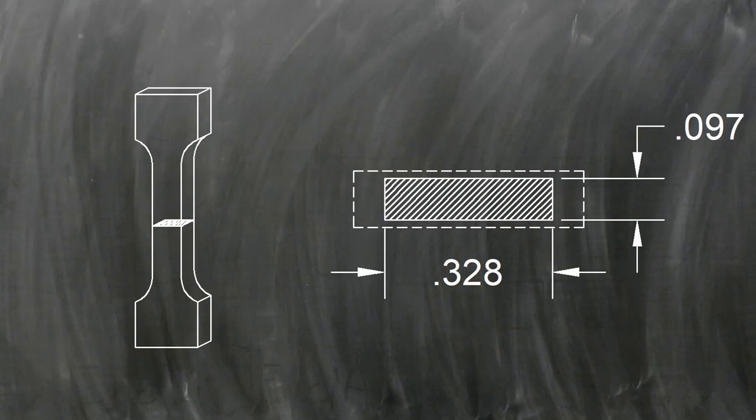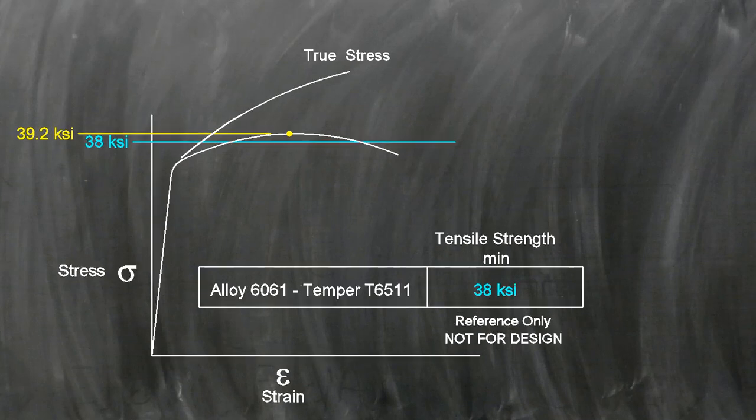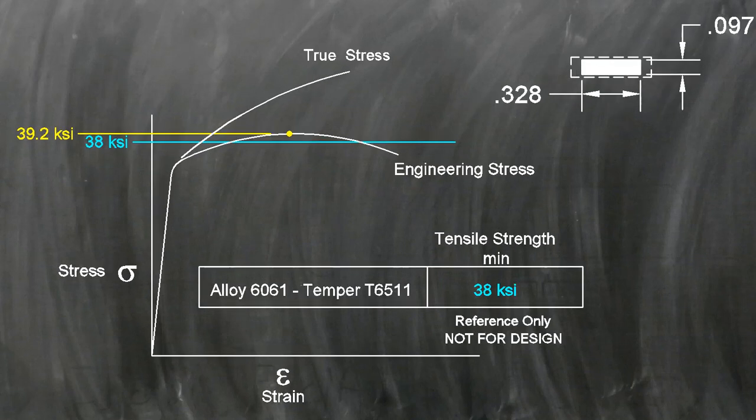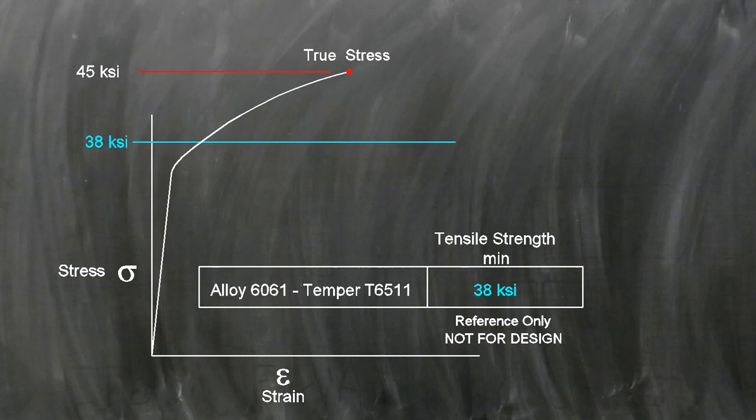With true stress, we measure the area for each reading. Our area gets smaller and smaller as it's stretched. Do you see what that does to the true stress level? It keeps increasing as the part necks down and gets smaller. The diagram of true stress looks like this.